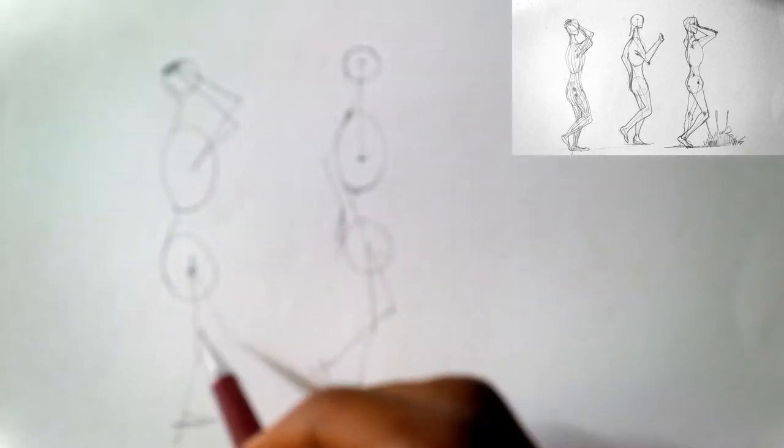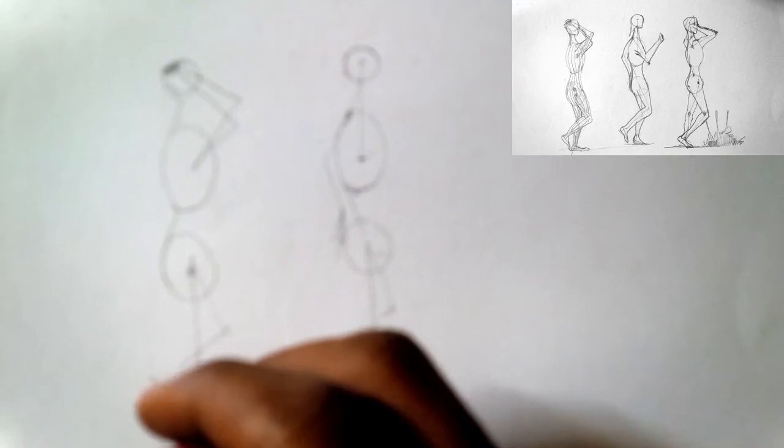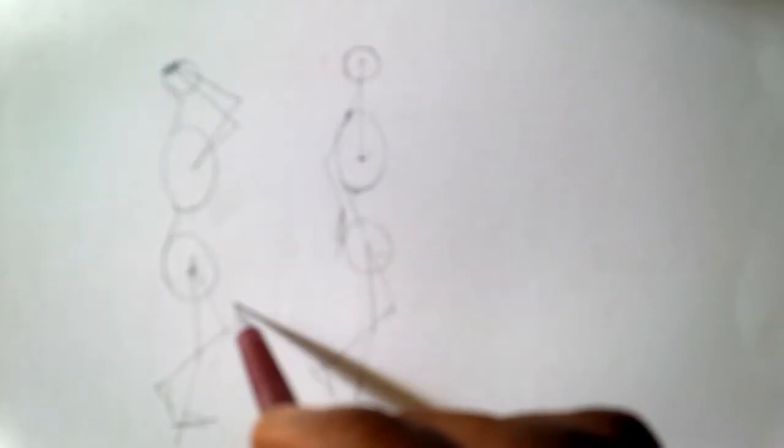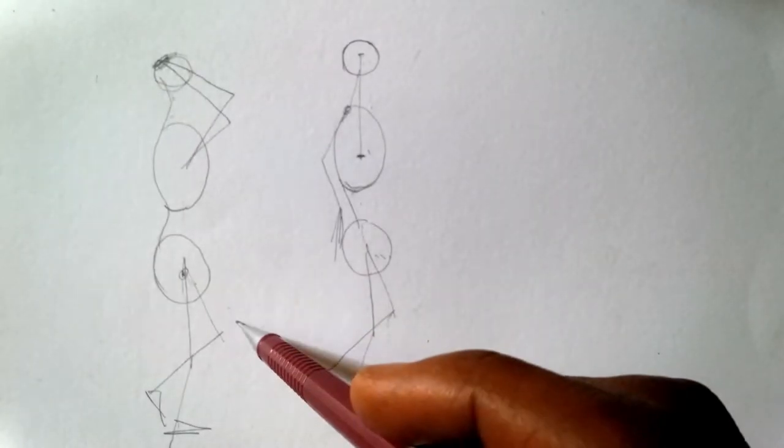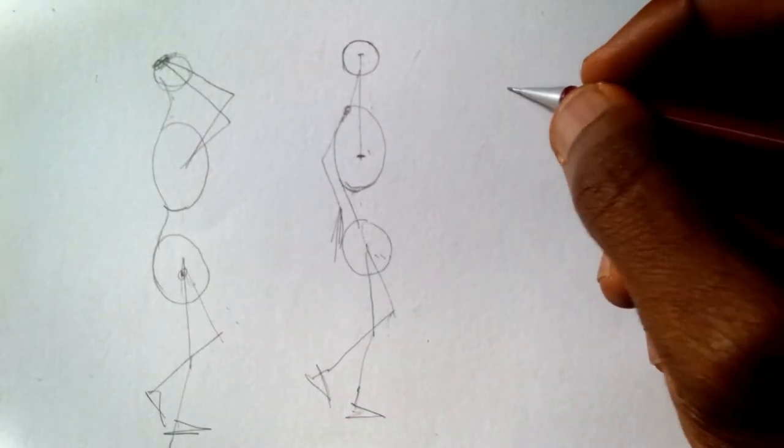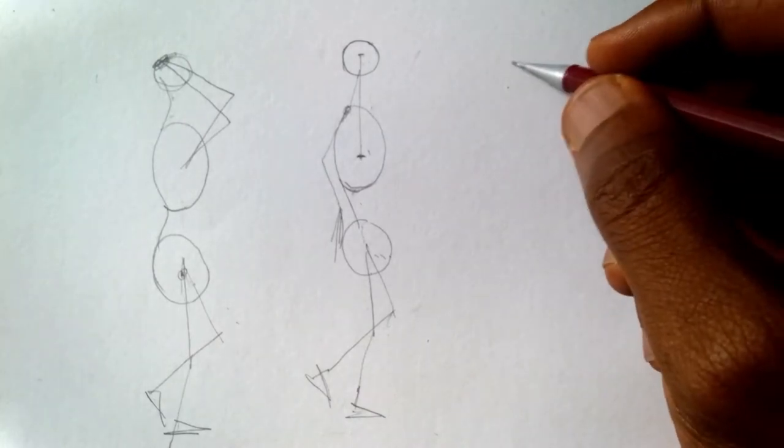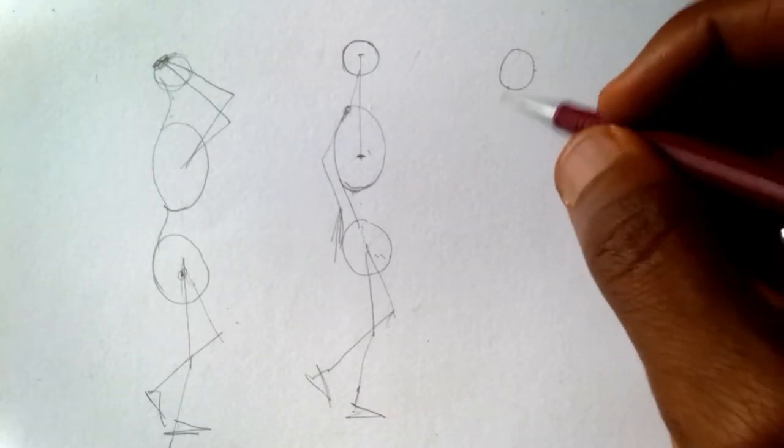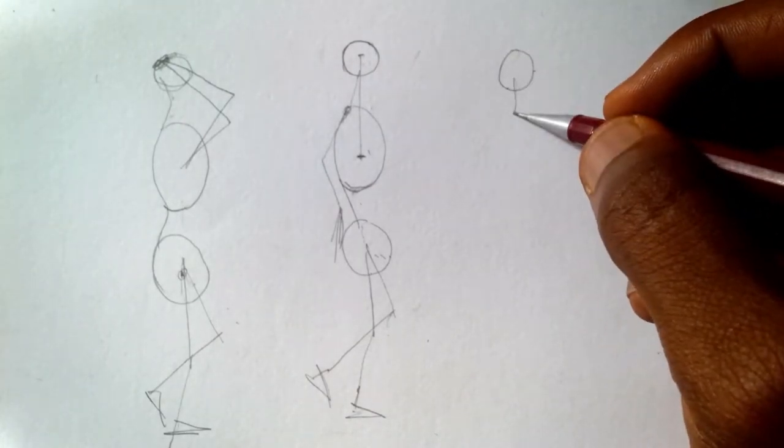We draw another one in a cross direction. Let me add the foot. Let's draw another shape. We're making three shapes, three human figures just to make you understand.